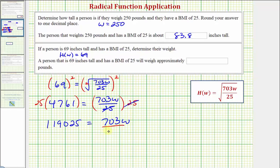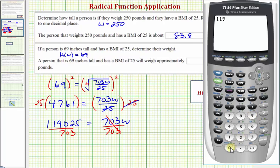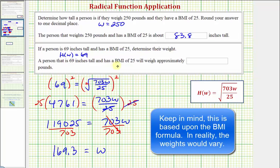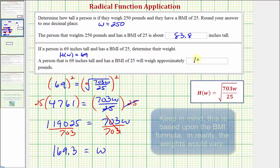For our last step, we divide both sides by 703. 119,025 divided by 703 is approximately 169.3. The right side simplifies to W, which means a person that is 69 inches tall and has a BMI of 25 will weigh approximately 169.3 pounds.